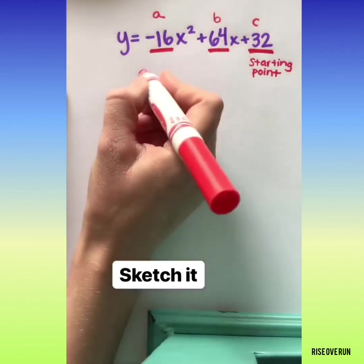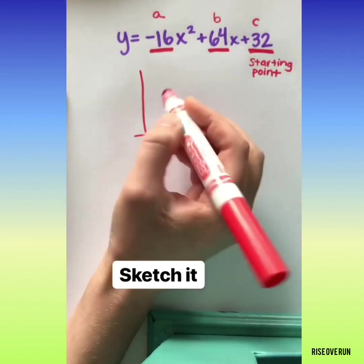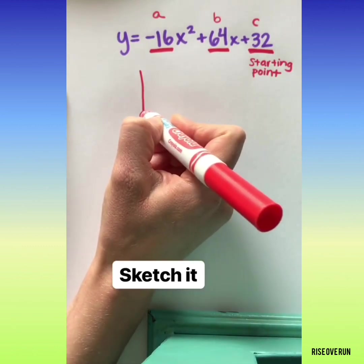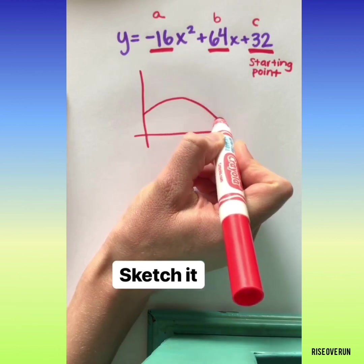Let's go ahead and make a sketch of what we think is going on here. So if this is a baseball being hit from a high elevation, I'm going to start it up here and then I assume it's going to go up and eventually come down.